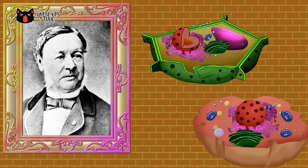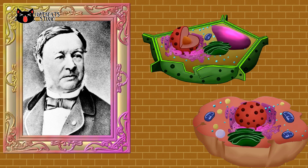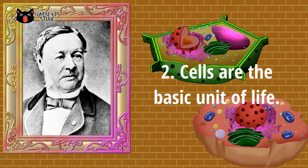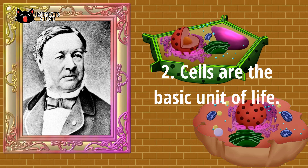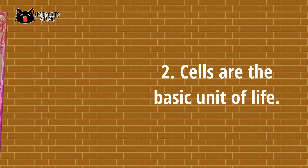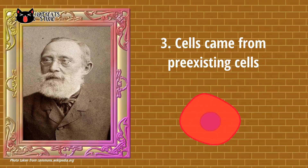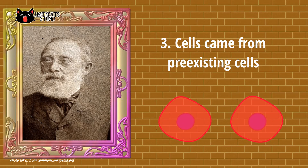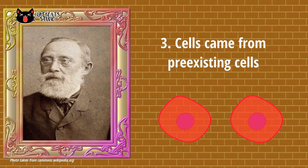Given these two conclusions, Schwann proposed the second part of his classical cell theory, which states that cells are the basic unit of life. The third part states that cells came from pre-existing cells that have multiplied, after the description of Rudolf Virchow in 1858.